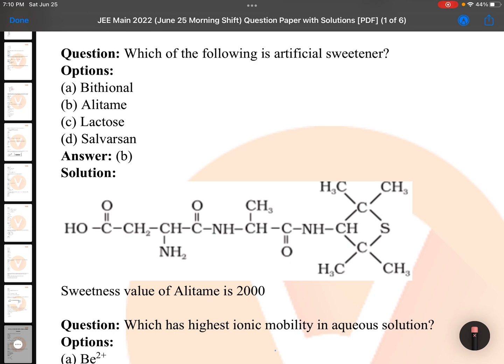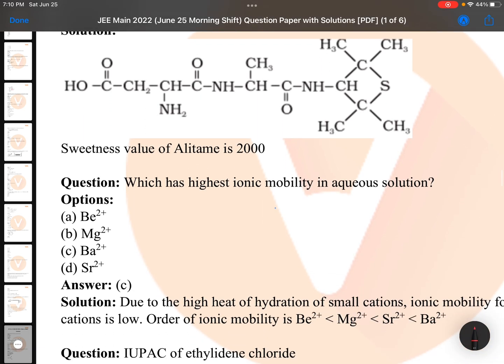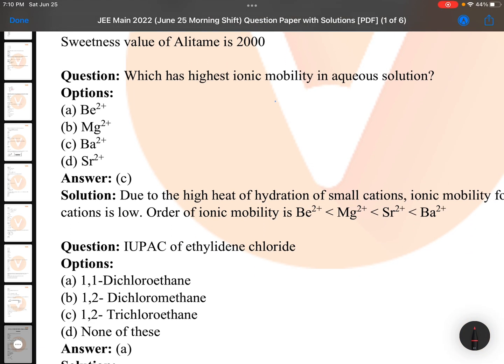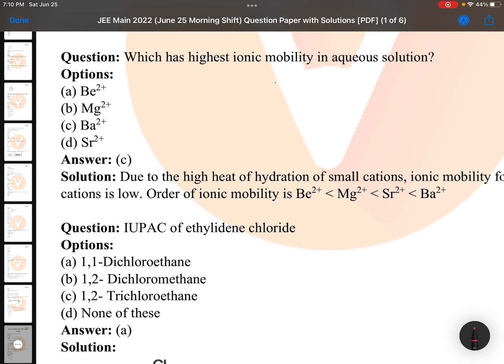Which of the following is artificial sweetener? Direct answer: Alitame. This is NCERT direct bit. Your teachers asked you to remember all this. Now, artificial sweetness value of Alitame is maximum.